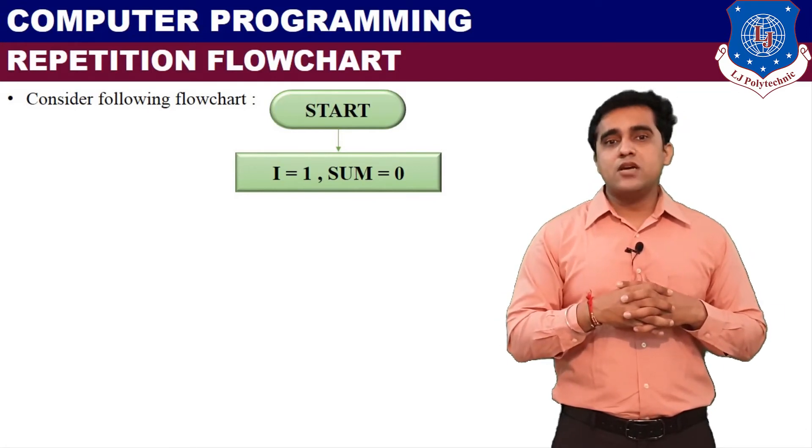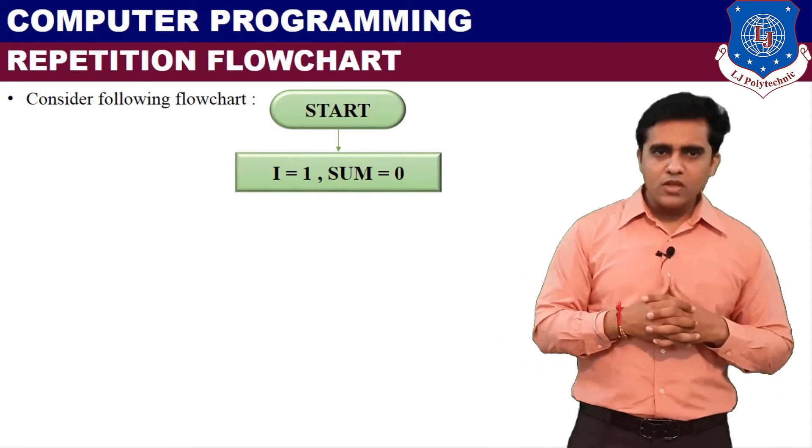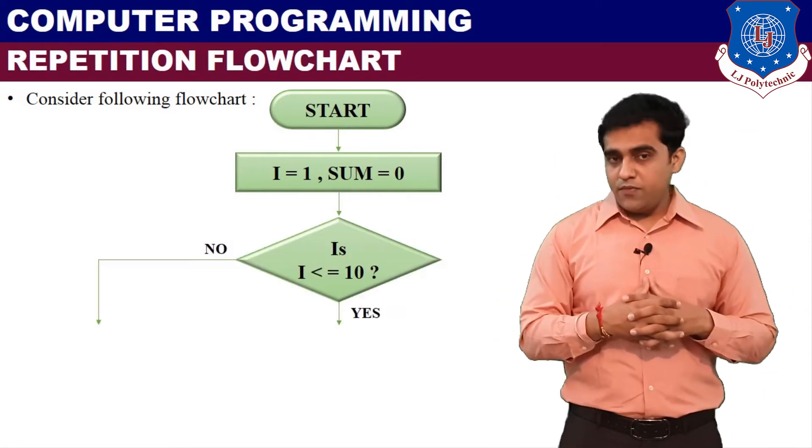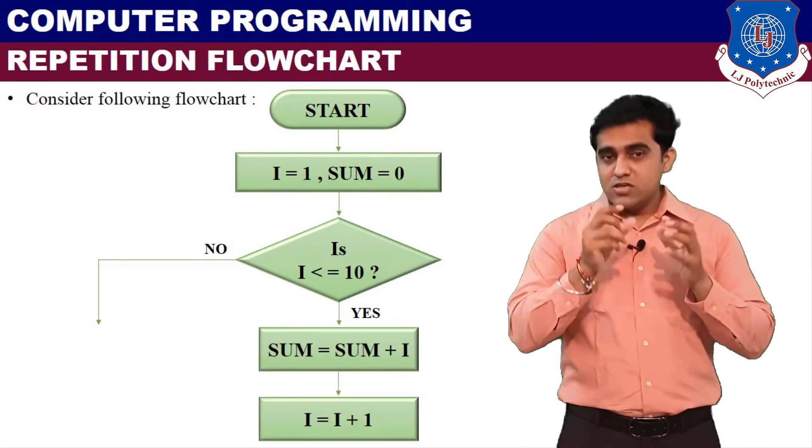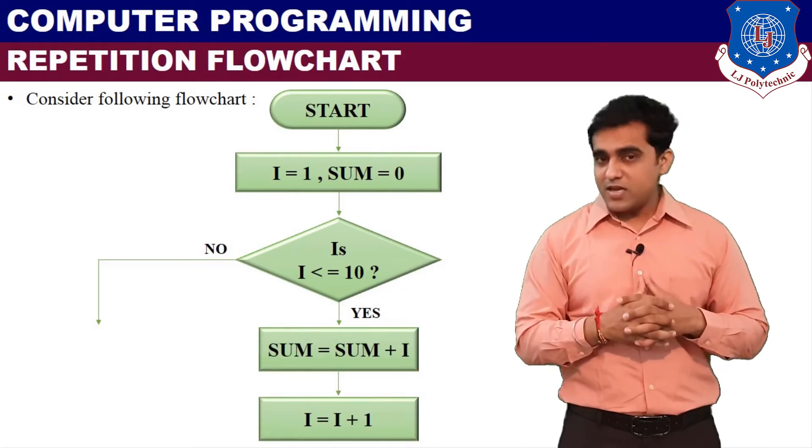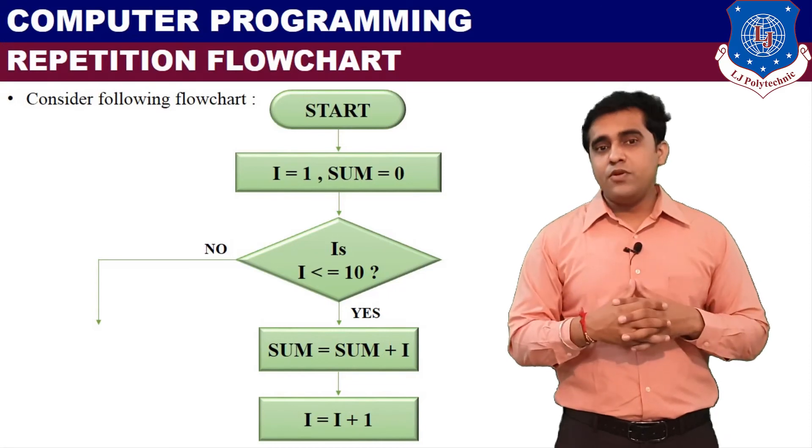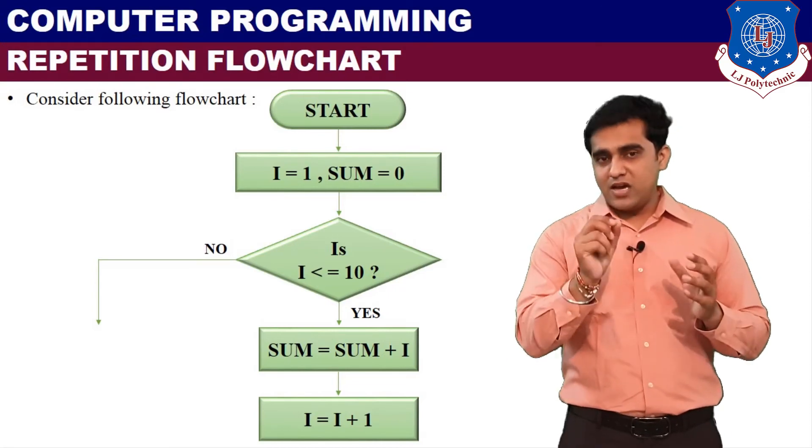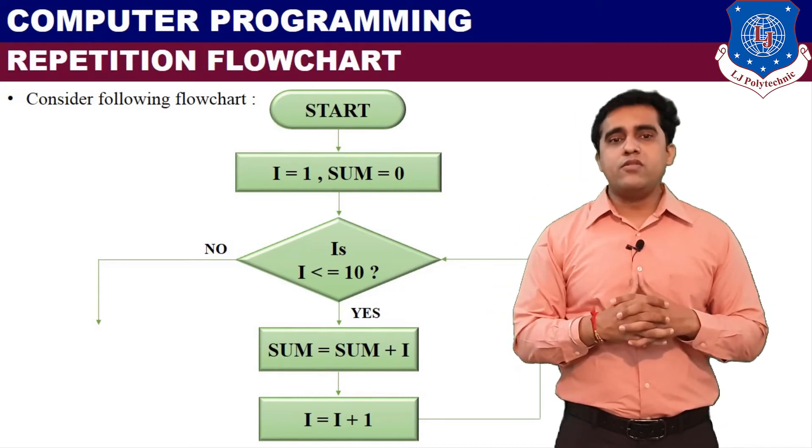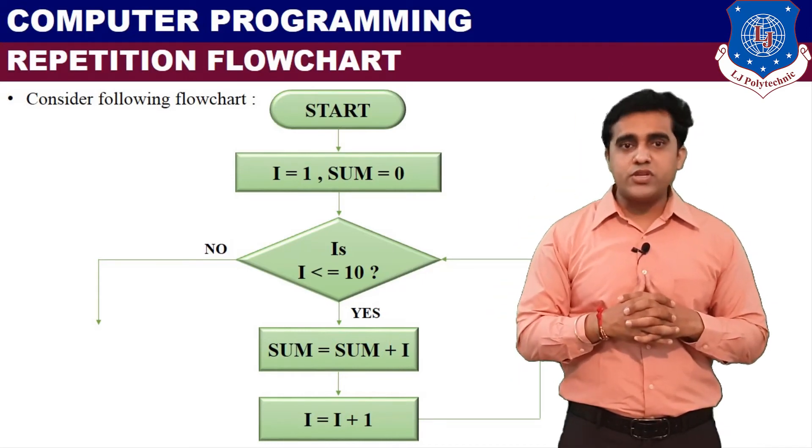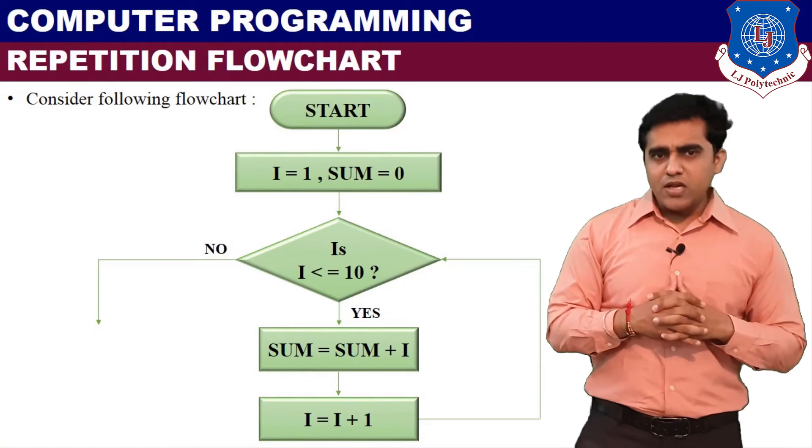Then condition: if I less than equals to 10, yes, then sum equals to sum plus I, and then we will increment I by 1. I equals to I plus 1. And again we are going to check whether the I's value less than equals to 10 or not.